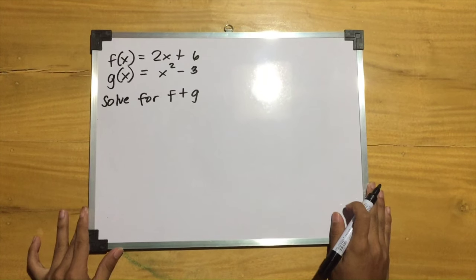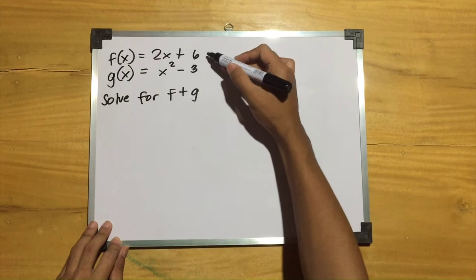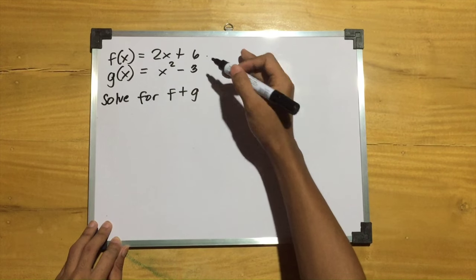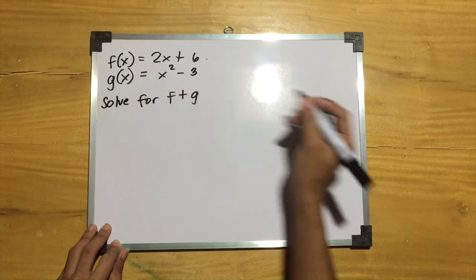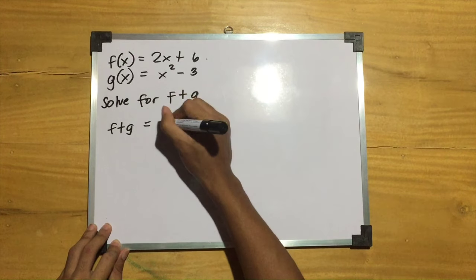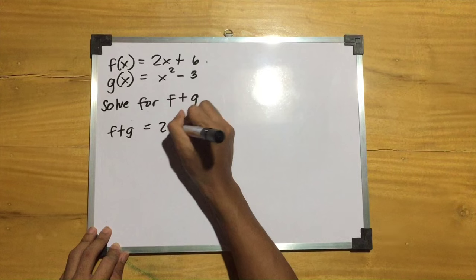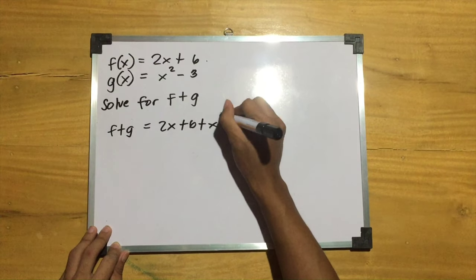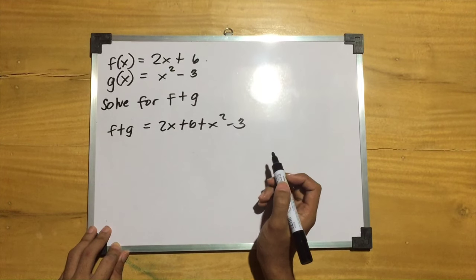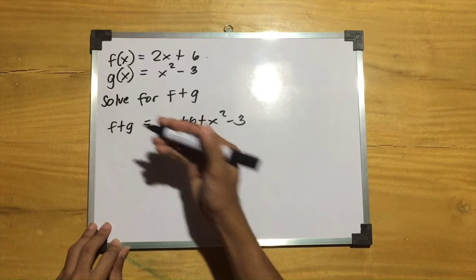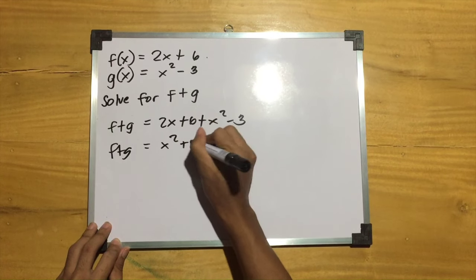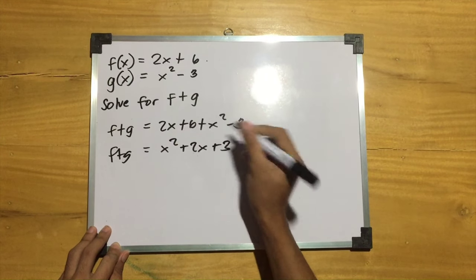Let us solve for the sum of functions. Let f of x equal 2x plus 6 and g of x equal x squared minus 3. Solve for f plus g. To solve for the sum, all you have to do is add them. So f plus g equals 2x plus 6 plus x squared minus 3. Combining like terms, f plus g equals x squared plus 2x plus 3.